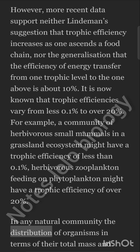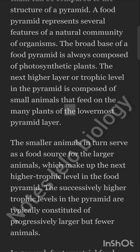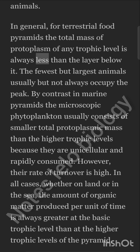In any natural community, the distribution of organisms in terms of their total mass and their contribution to the food chain can be compared to the structure of a pyramid. A food pyramid represents several features of a natural community. The broad base is always composed of photosynthetic plants. The next higher trophic level is composed of small animals that feed on plants of the lowermost layer. These smaller animals serve as food for larger animals, which make up the next higher trophic level. Successively higher trophic levels are typically constituted of progressively larger but fewer animals. For terrestrial food pyramids, the total mass of protoplasm at any trophic level is always less than the layer below it.